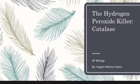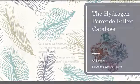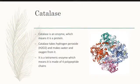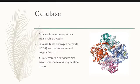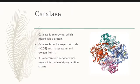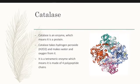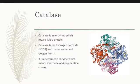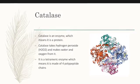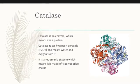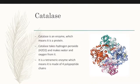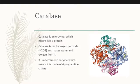Hello, my name is Angelo Molina-Castro, and I will be talking about the hydrogen peroxide killer known as catalase. The enzyme catalase is a protein that takes hydrogen peroxide, H2O2, and makes water and oxygen from it. This enzyme is important because hydrogen peroxide is a byproduct from aerobic respiration and can be harmful on the inside of our organism's cells.